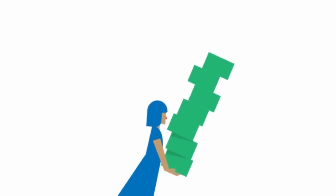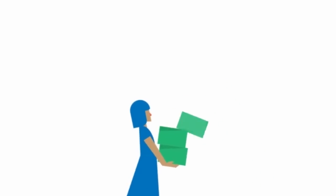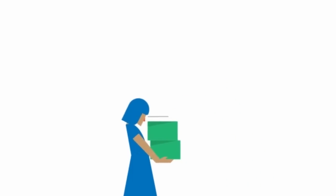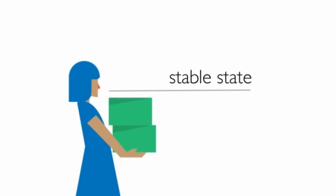An analogy is a person carrying boxes. If you try to carry too many boxes, you'll end up dropping some. And if you continue, you'll keep dropping boxes until you reach a manageable amount. This is your stable state.